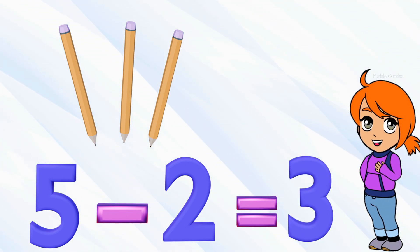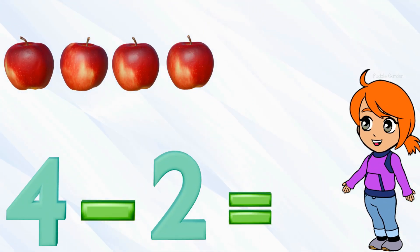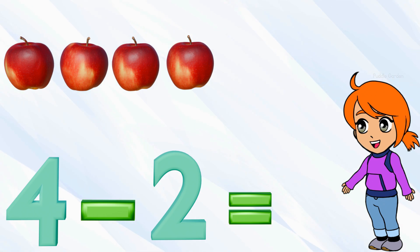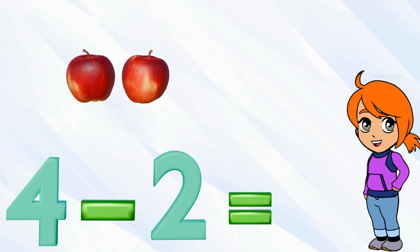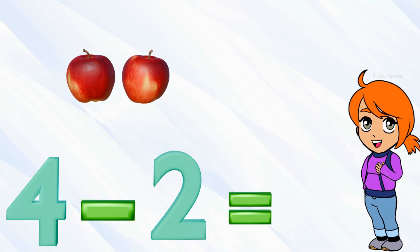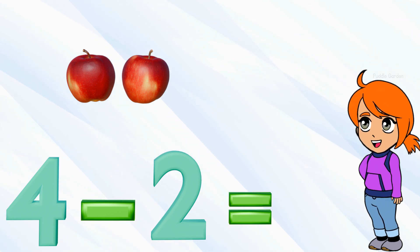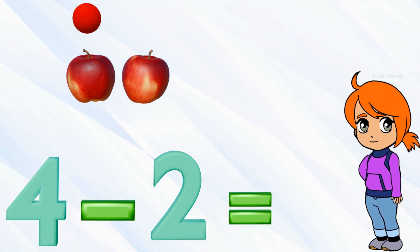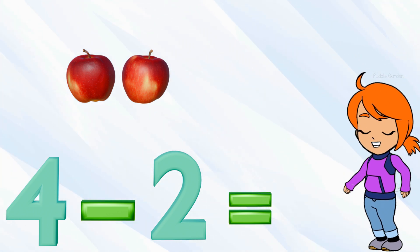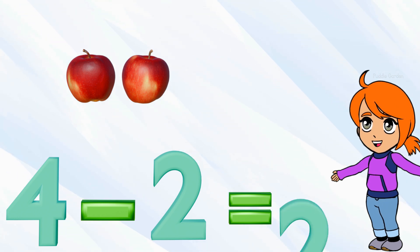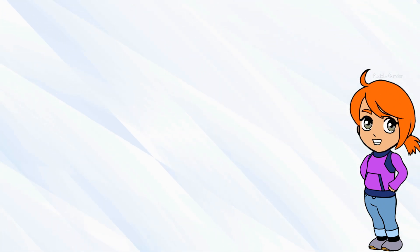Let's try another example. If I have four apples — here they are, four wonderful apples — and I want to give away two, that means I want to subtract two. Let's count how many are left. We started with four and we took away two, so now we have one, two. So four subtract two equals two. Nice work!